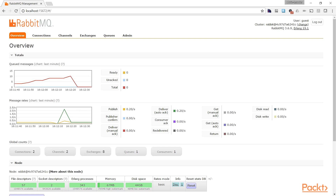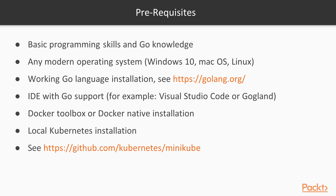So this is a lot of ground to cover. What do we need to bring along for this course? First of all, you need basic programming skills and knowledge in the Go language. I will do the development using Windows 10, but any modern operating system like macOS or Linux is fine. You need a working Go language installation, and an IDE of your choice with good Go support, such as Visual Studio Code or GoLand from JetBrains. You also need to have Docker Toolbox or Docker Native installed, and finally, a local Kubernetes installation using Minikube. Make sure you have everything installed before you start with the different sections of this course.